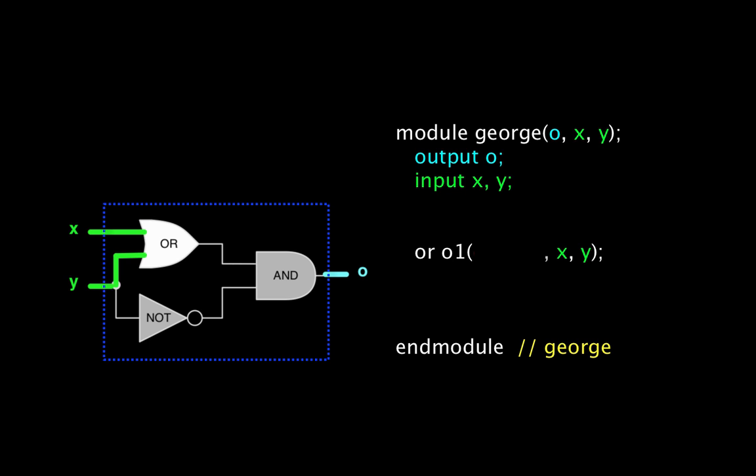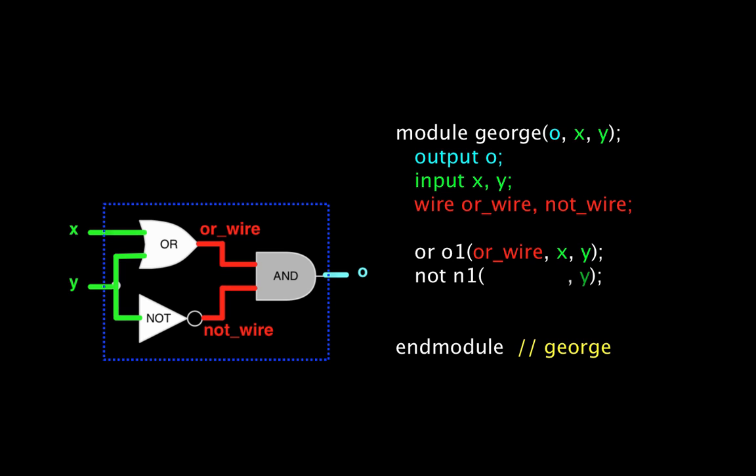But our OR gate's output connects directly to our AND gate. To handle this, we need to declare a wire. For our module, we need to declare two wires, which I'll call OR wire and NOT wire. Now I can connect the OR gate's output to OR wire. Similarly, I can instantiate the NOT gate and connect its input to Y and its output to NOT wire.